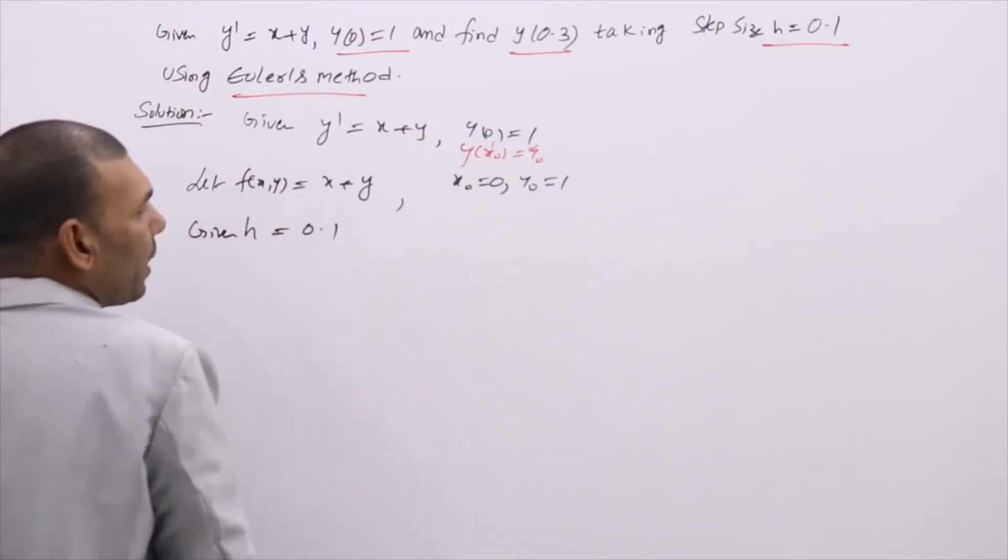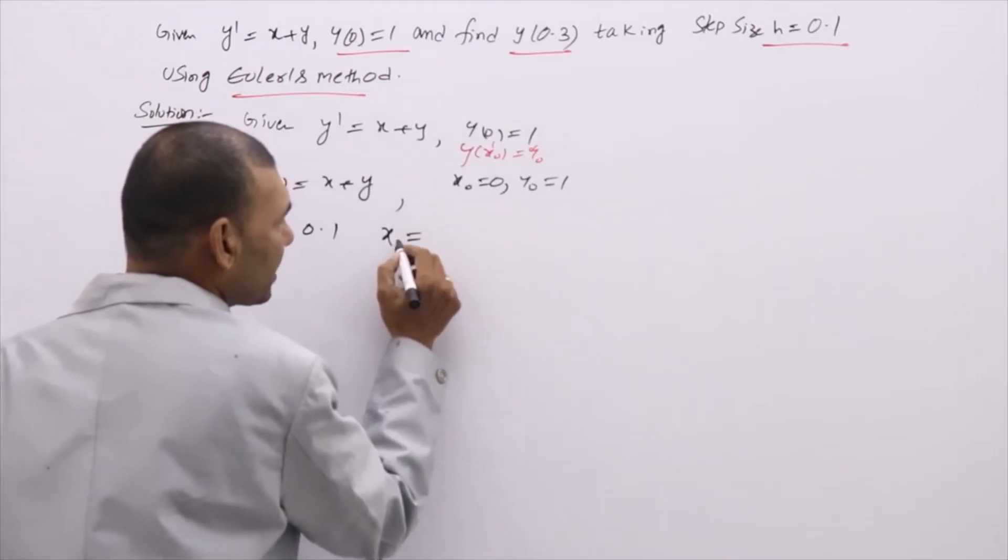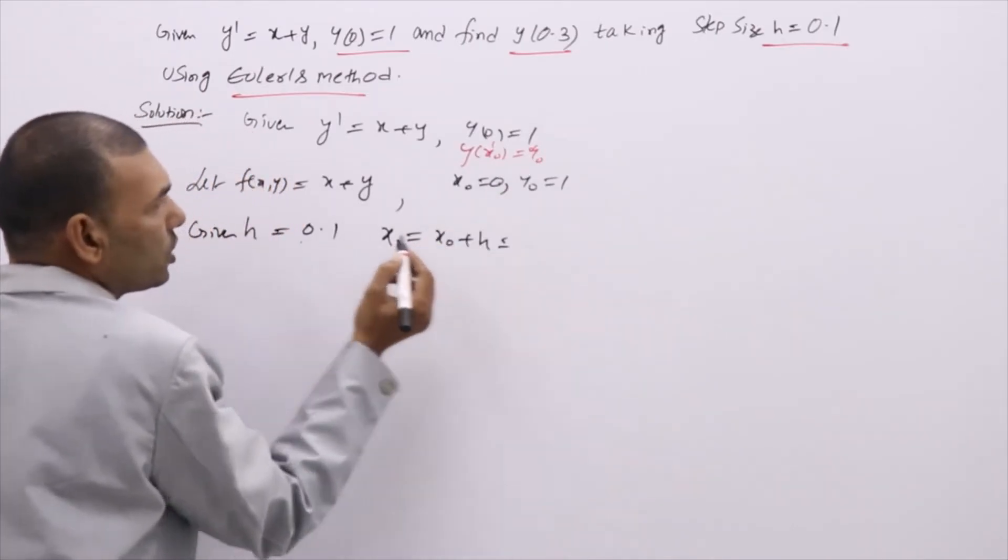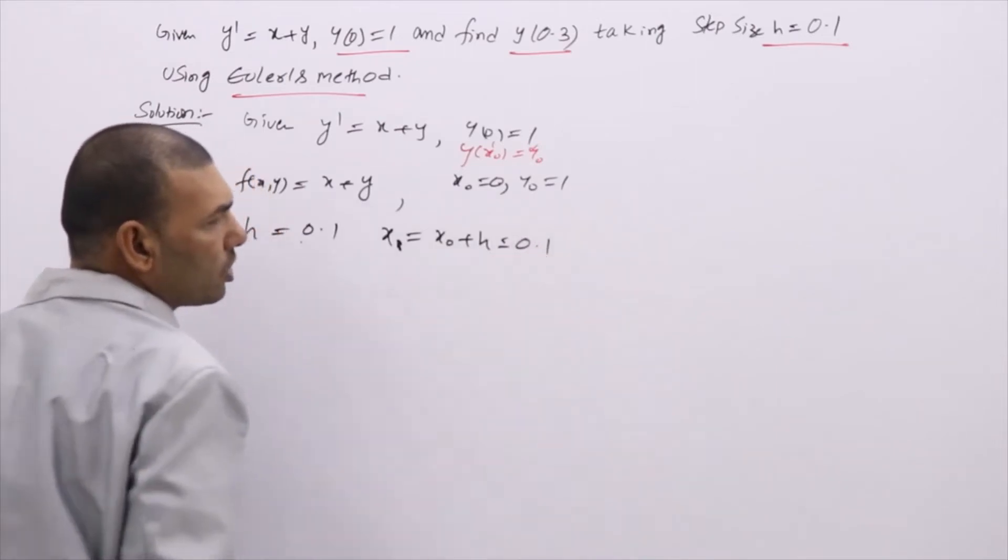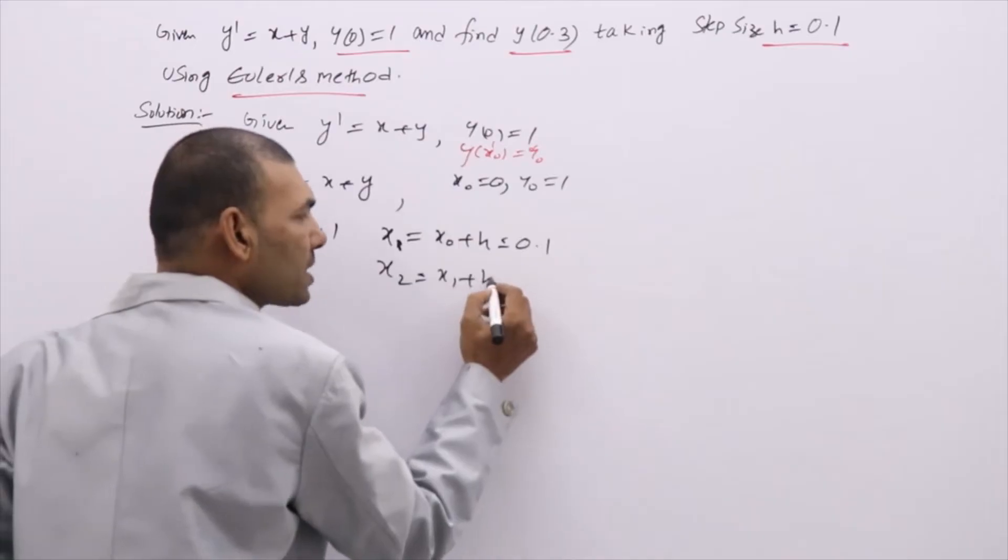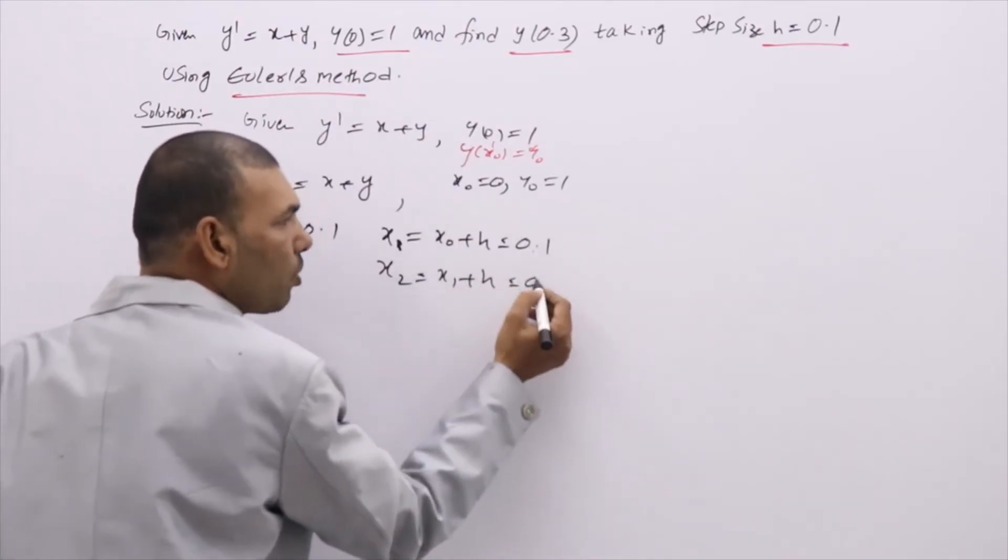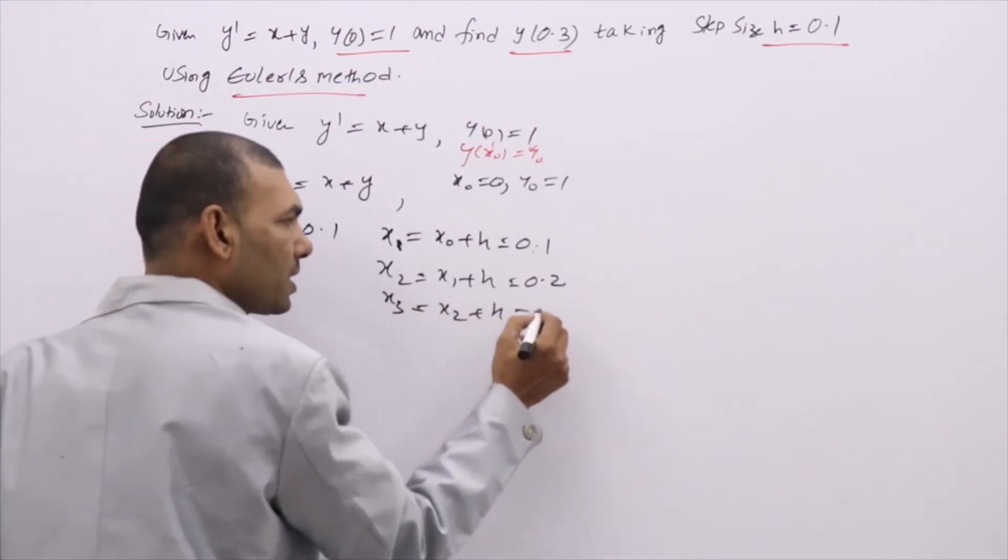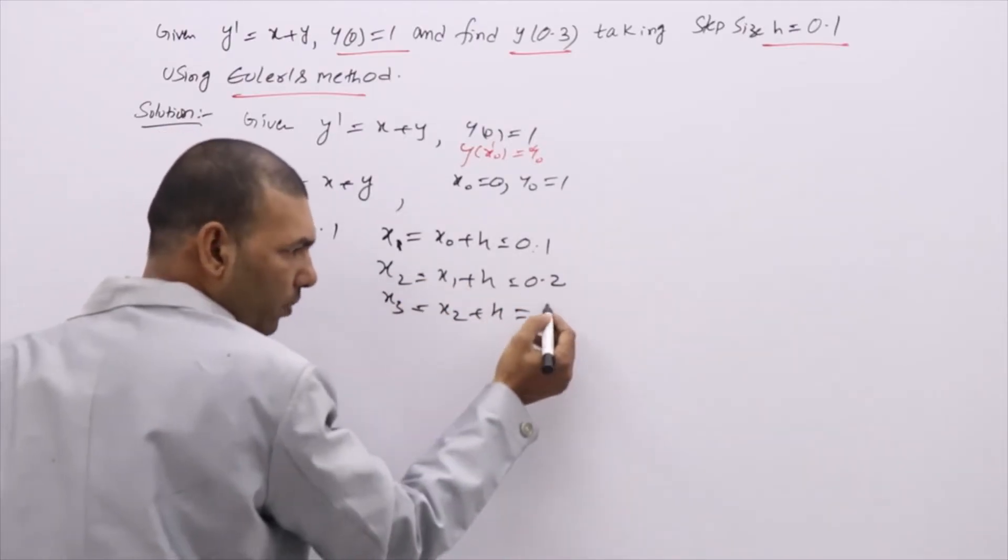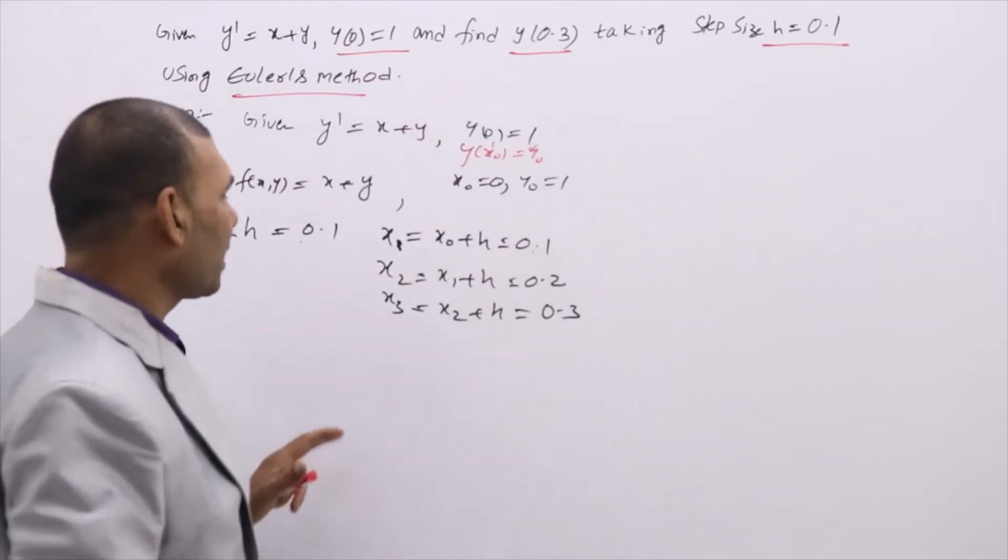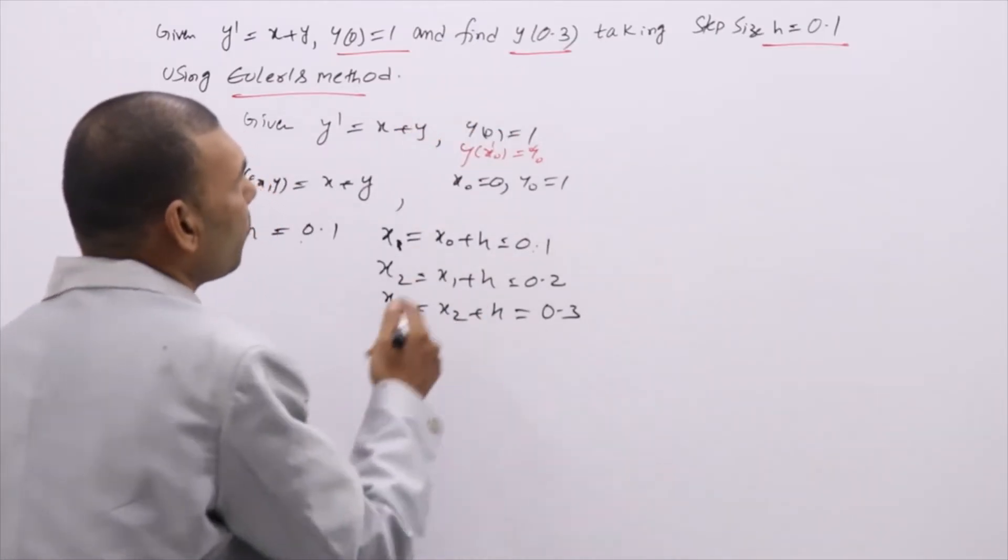h = 0.1 means x₁ will be x₀ + h = 0 + 0.1 = 0.1. x₂ will be x₁ + h = 0.1 + 0.1 = 0.2. x₃ will be x₂ + h = 0.2 + 0.1